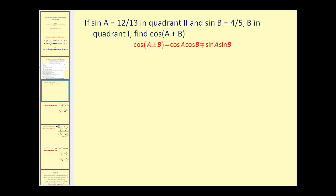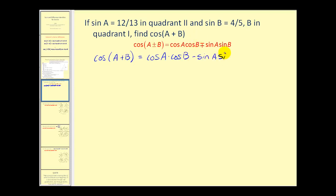Here's a problem where sine a is twelve thirteenths in the second quadrant, and sine b is equal to four fifths in the first quadrant. We want to find the cosine of the quantity a plus b. Let's write out our identity — for a sum, we use a difference of the two products. We are given sine a and sine b, but we still have to find cosine a and cosine b.